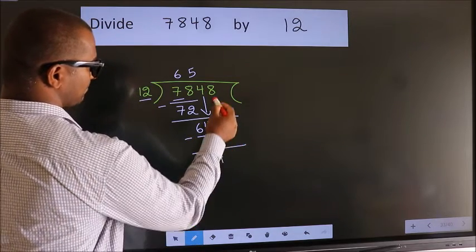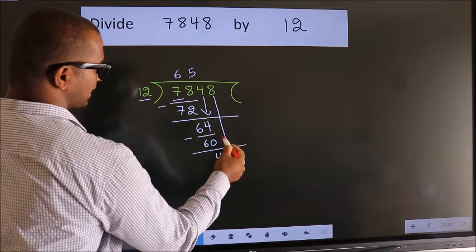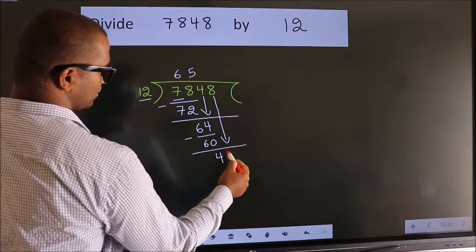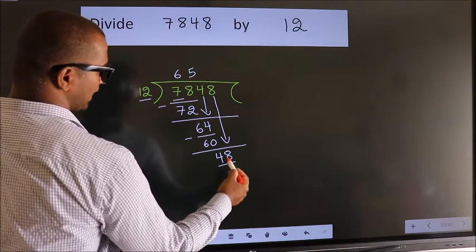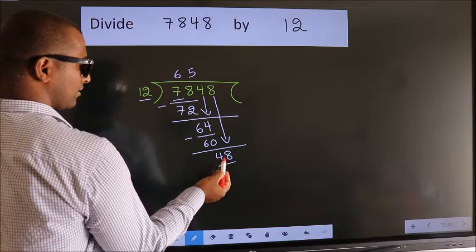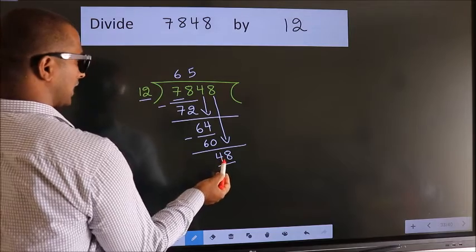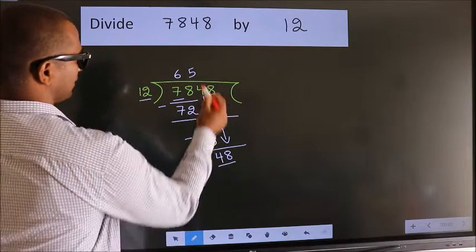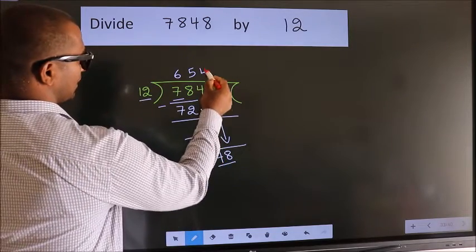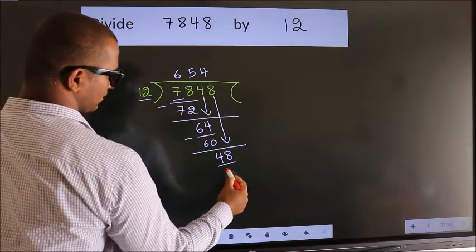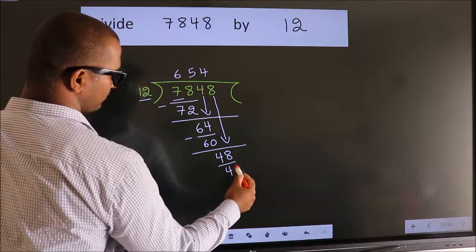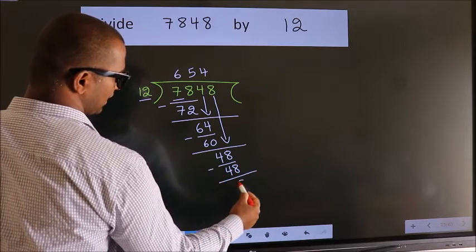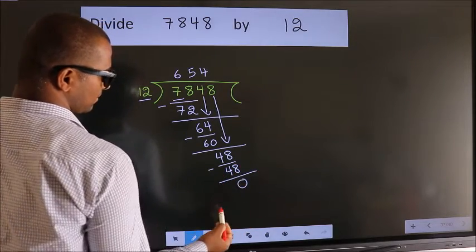After this, bring down the beside number. So 8 comes down, giving us 48. When do we get 48 in the 12 times table? 12 fours are 48. Now we subtract and we get 0.